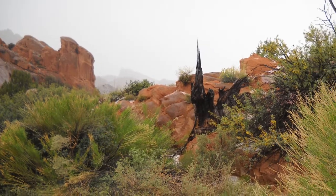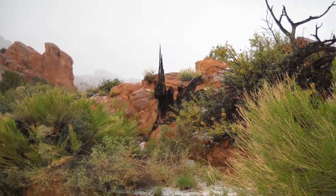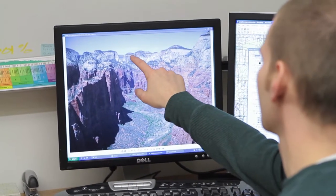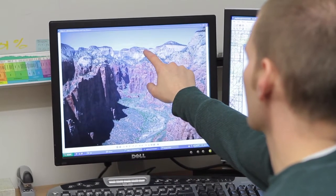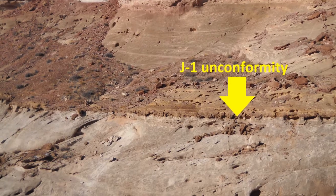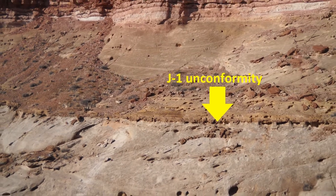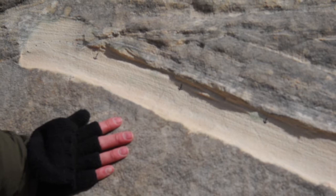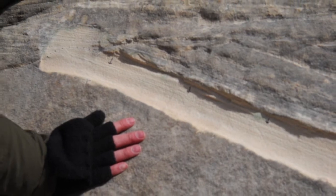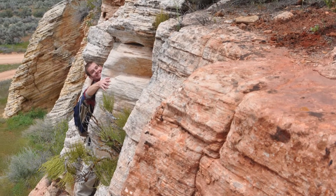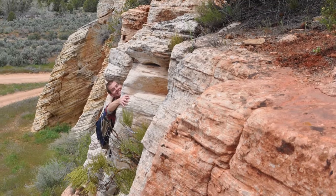When the Navajo sandstone was deposited, Utah looked much like the present-day Sahara Desert. Over time, deposition in this sand sea ceased and erosion took over, creating the eroded surface on top of the Navajo sandstone called the J-1 or Jurassic-1 Unconformity. After this erosional period, deposition began again with an interior seaway in Utah called the Carmel Seaway. Shoreward of this seaway, dunes began to form again.